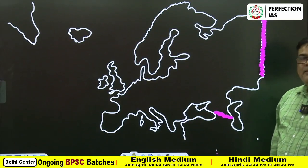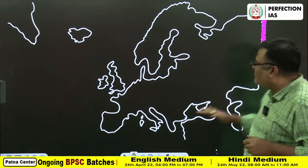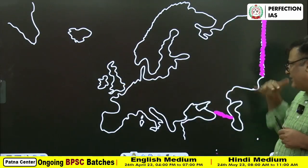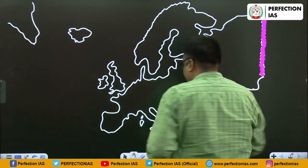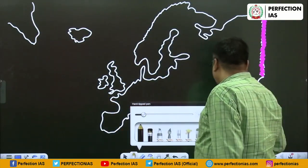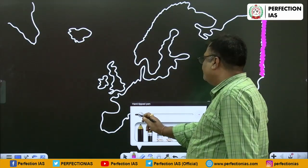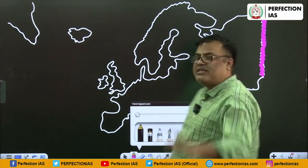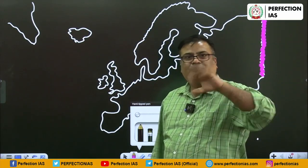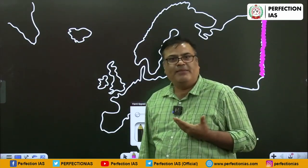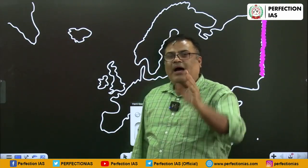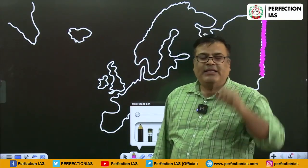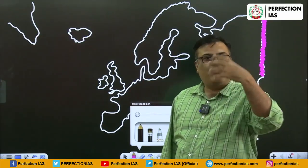I hope you understood how to approach this from any direction. Now we have done the mapping. Next, we will put in the important mountains. Try a formula-tested formula: read through it with me once or twice, then get an outline map of Europe from the market and start marking by yourself. If you mark it 10 times, it will definitely give you a good level of comfort in the prelims examination.